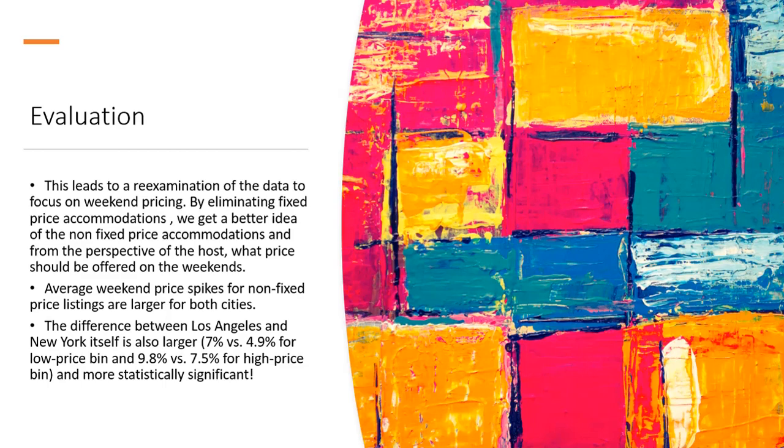Further evaluating, we could focus on weekend pricing. And we would eliminate fixed price accommodations so that we could concentrate on seeing how much the price goes up on weekends. So that we can determine if we're charging the right price. So we look at average weekend price spikes for non-price listings for both cities. And in fact, they are. The difference between Los Angeles and New York is also larger for these spikes. That's 7% to 4.9%.